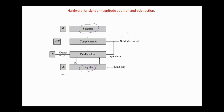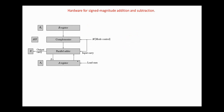If we have here zero for add, then B is not complemented. But if we have here one, we complement B and add one with it, so we receive the two's complement of B. The result of the operation is stored in the A register, so here the A register is considered as an accumulator. In sign-magnitude representation, the carry flip-flop is transferred to the overflow flag, and if it is one, we have overflow.